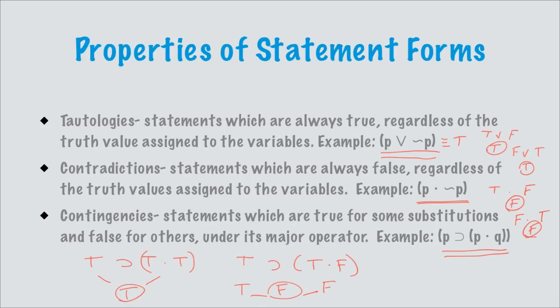Statements are either true or false, and they are also either tautologies, contradictions, or contingencies. It's important to emphasize that statements are never valid or invalid. Saying a statement is 'valid' would be an incorrect use of terminology — only arguments are valid. A statement has a property: tautology, contradiction, or contingency. A statement can be true or false; it can't be valid.